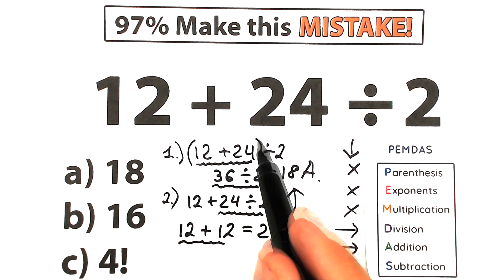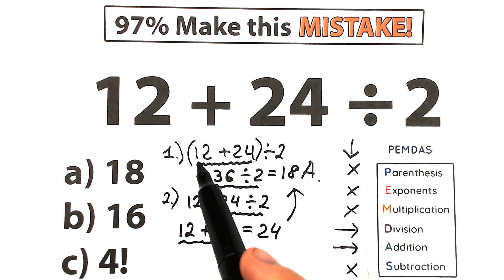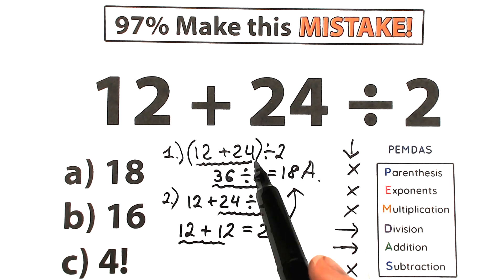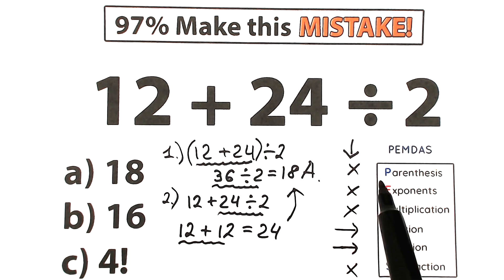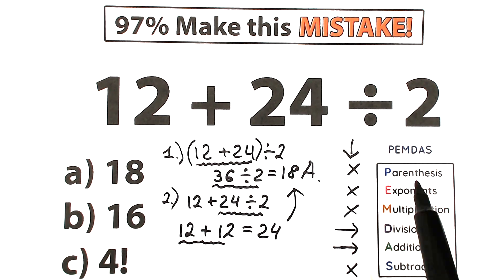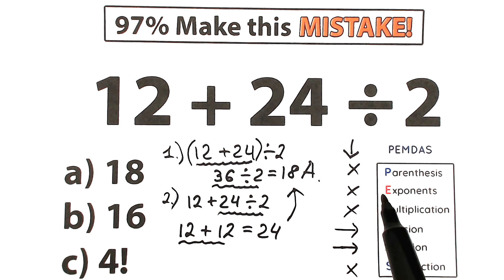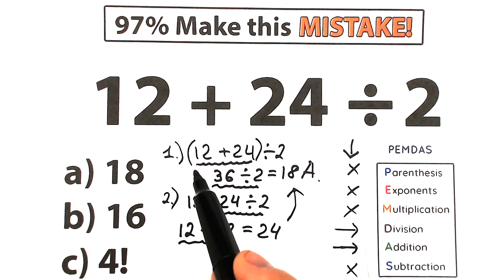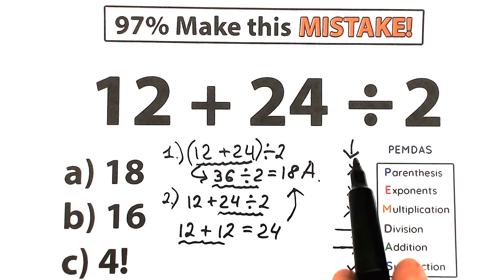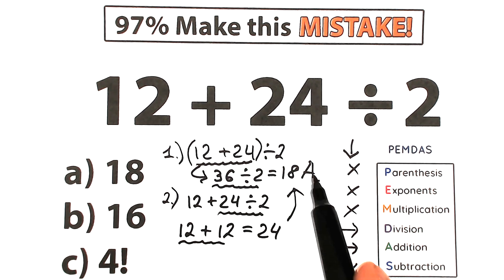But with parentheses, this question is okay in first interpretation, because we should add at first before division, because addition is inside parentheses, where parentheses is our first step. Parenthesis has the highest priority. So then parentheses first, 36, then divided by 2 is 18. With parentheses, this is our case solution.